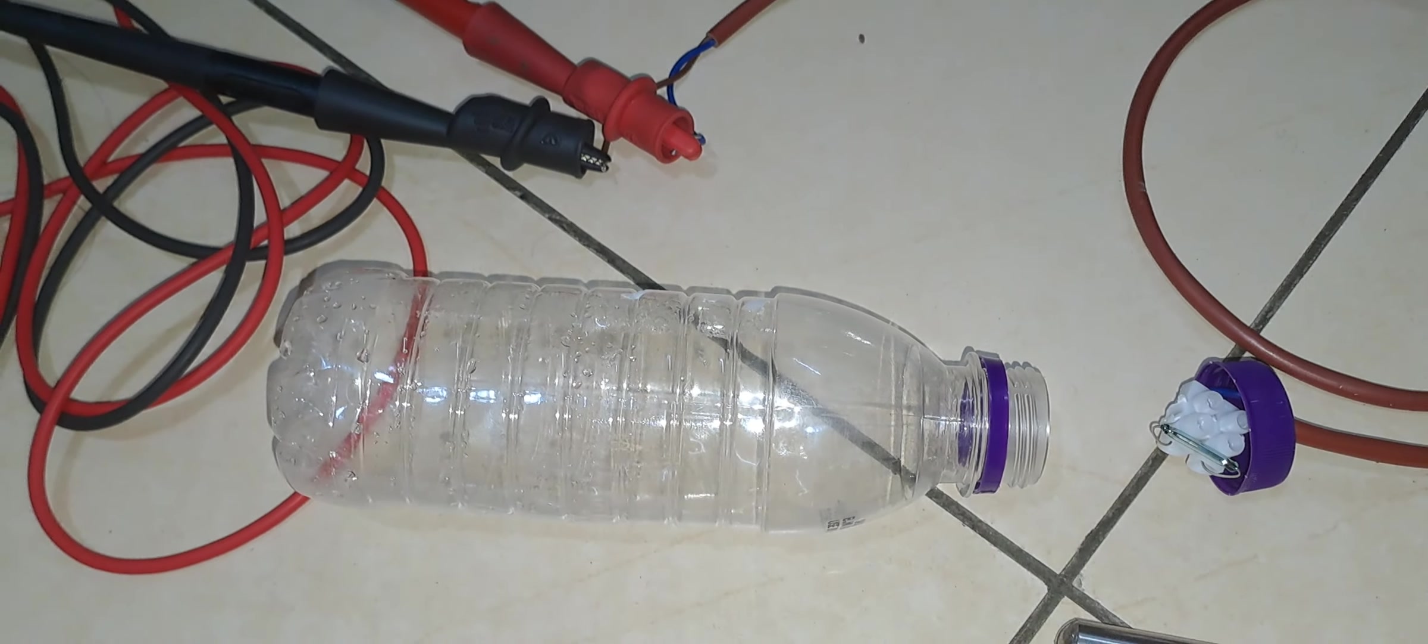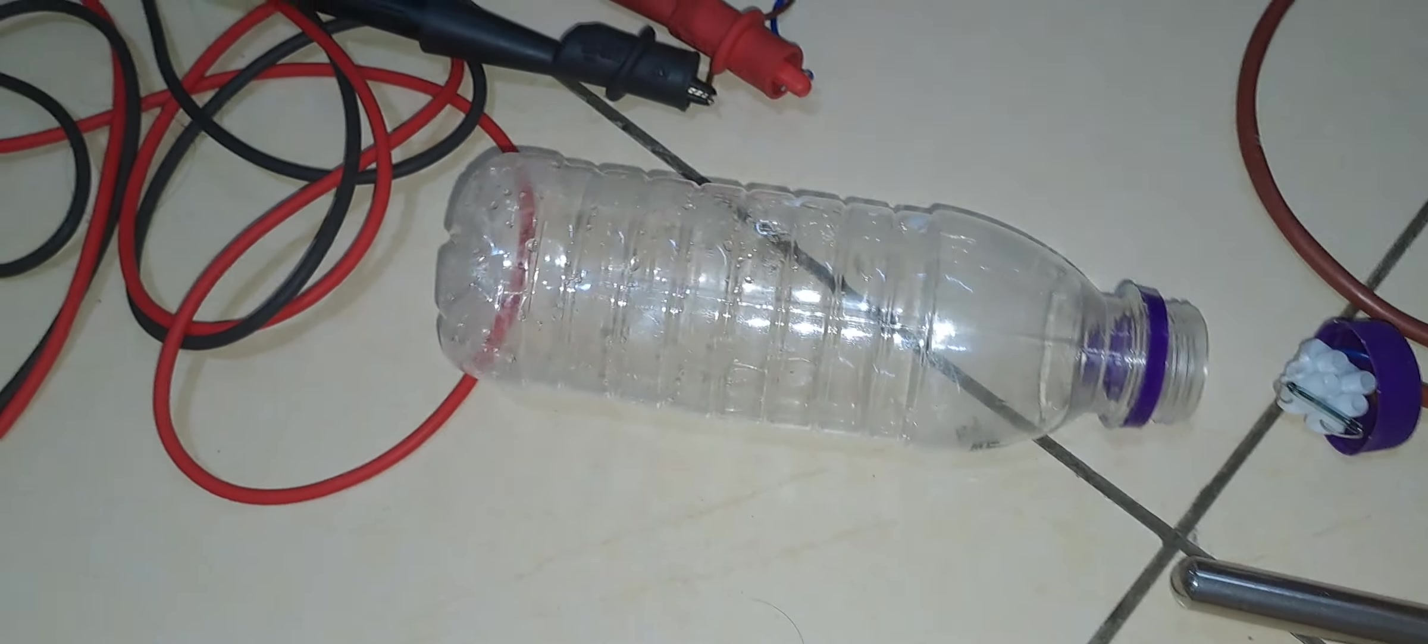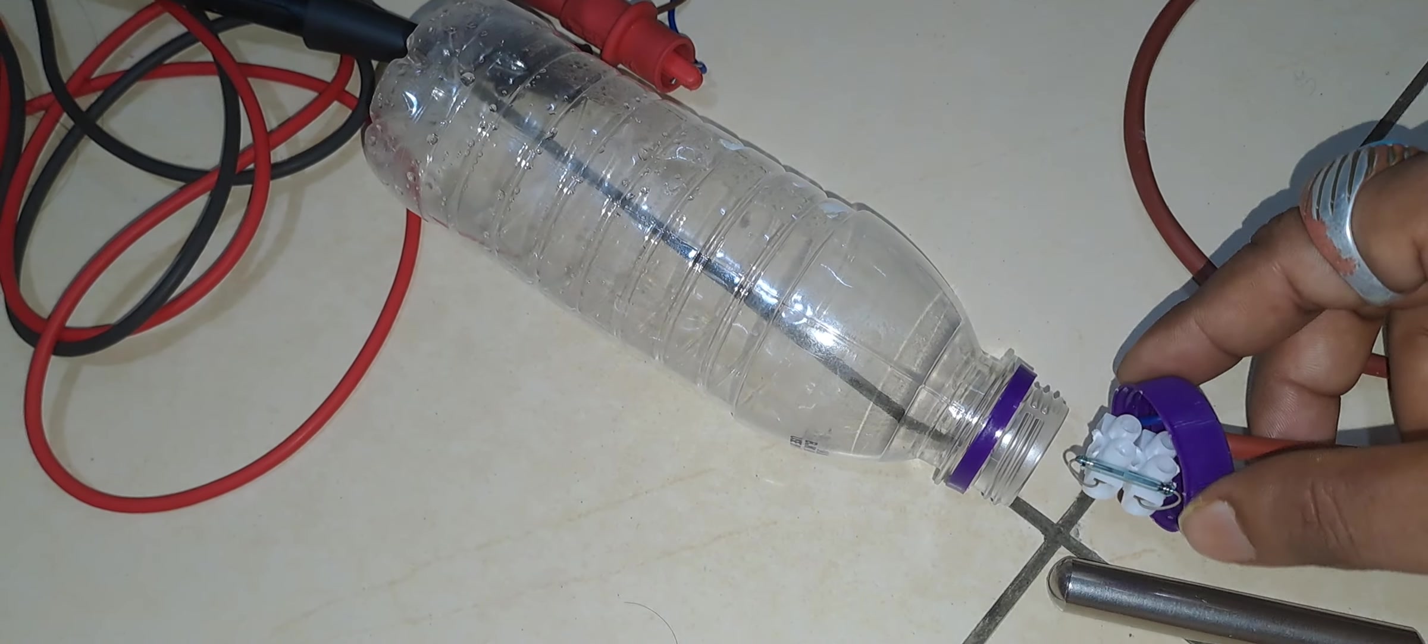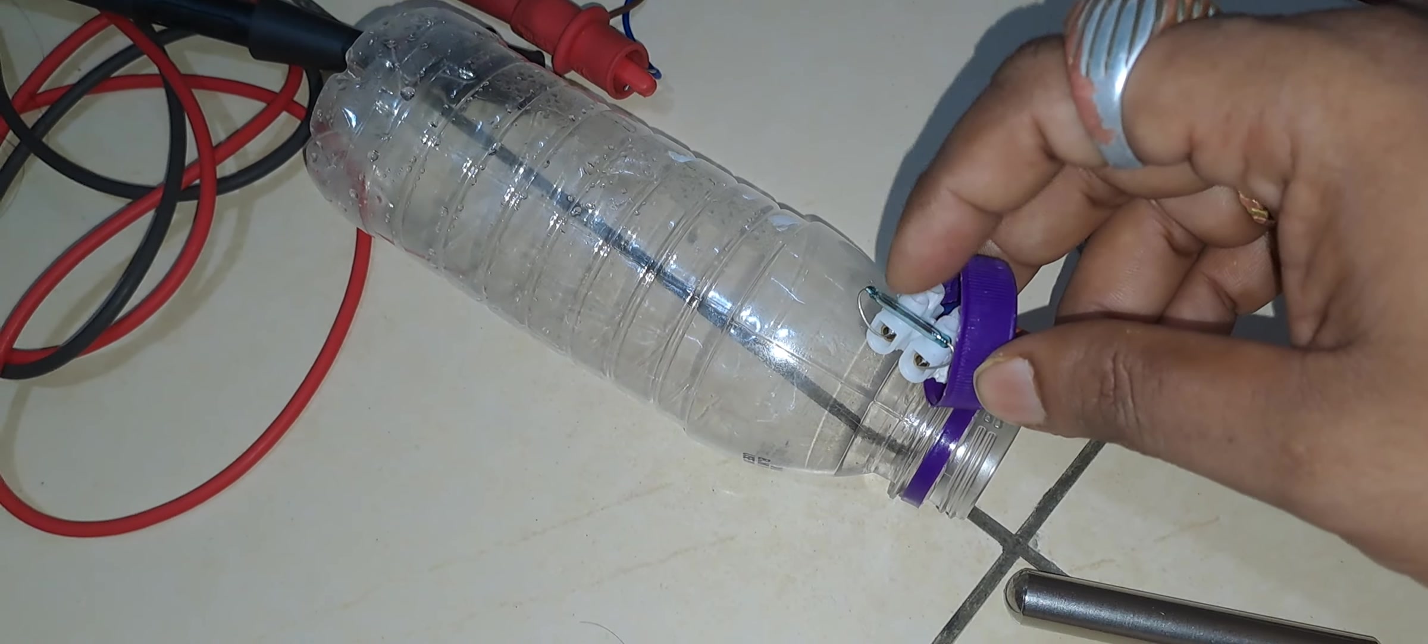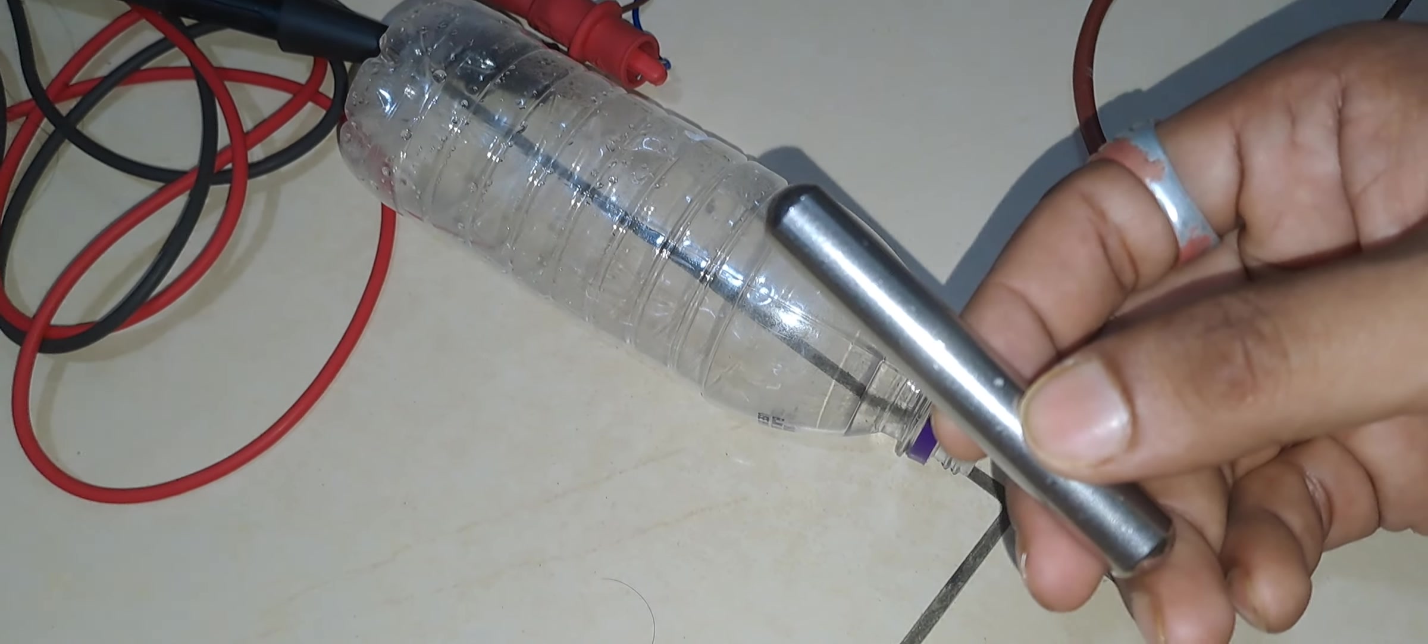So I've unboxed each component of the system. This is my water bottle. This is the cap of the water bottle and here you can see the reed switch. And here this is a bar magnet.